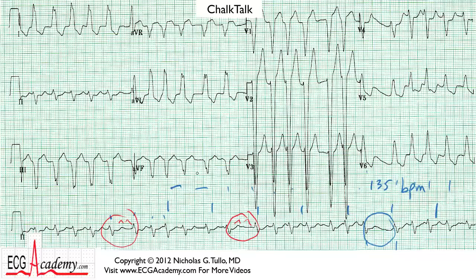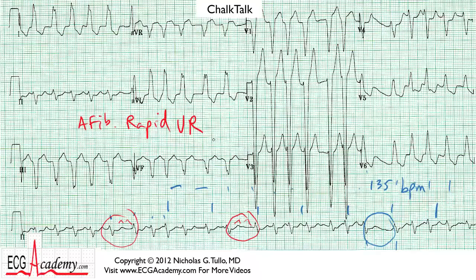So it's safe to say that the rhythm here is best characterized as atrial fibrillation with a rapid ventricular response. You should always characterize the ventricular response to atrial fibrillation as either rapid, moderate, or slow. If the rate is above 100, call it rapid; if it's below 60, call it slow; and in between, it's moderate — some people call it a controlled ventricular response. You could use either.